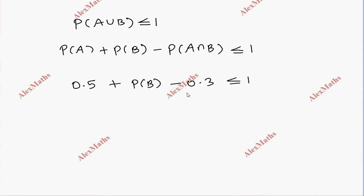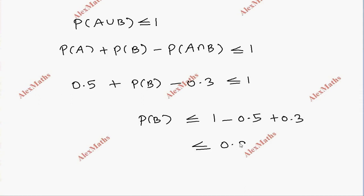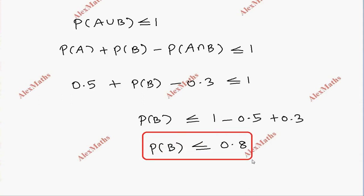Rearranging, P(B) is less than or equal to 1 minus 0.5 plus 0.3, which gives P(B) less than or equal to 0.8. So we have proved that the probability of B being selected is at most 0.8, that is P(B) is less than or equal to 0.8.